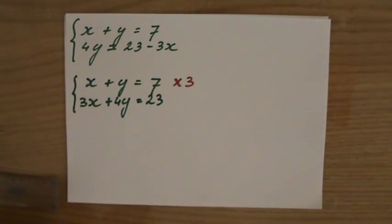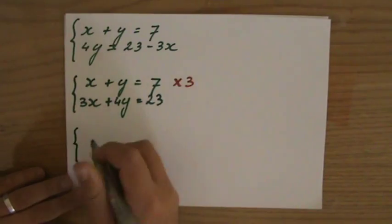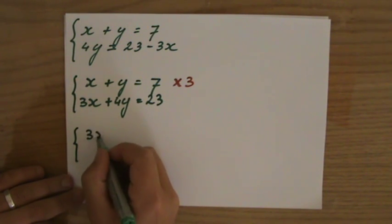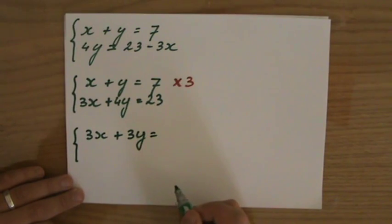I will multiply the first equation by three, and if I do so I've got to make sure that I multiply all the terms by three. Because some of you are going to write down seven here.